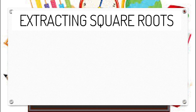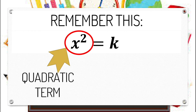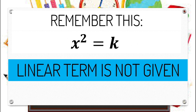When we are talking about extracting square roots, this method is used when a quadratic equation is in the form x squared equals k. Remember, in this form, our given terms are the quadratic term and constant term, and there is no linear term given in this format.